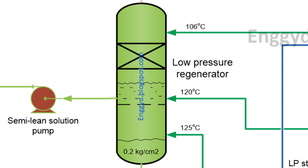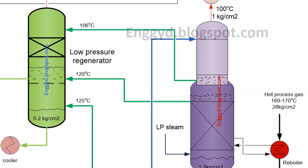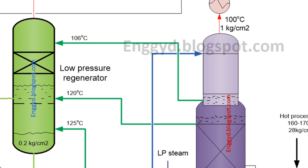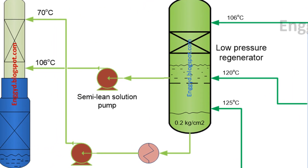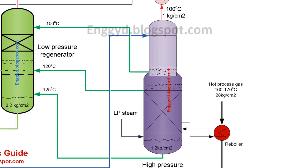The regeneration of the absorbent is a two-stage process. The first stage involves flashing the rich solution to a low pressure, which separates most of the CO2. The second stage uses steam stripping to further remove CO2 from the absorbent. The lean solution is then cooled and recycled back to the absorption tower.